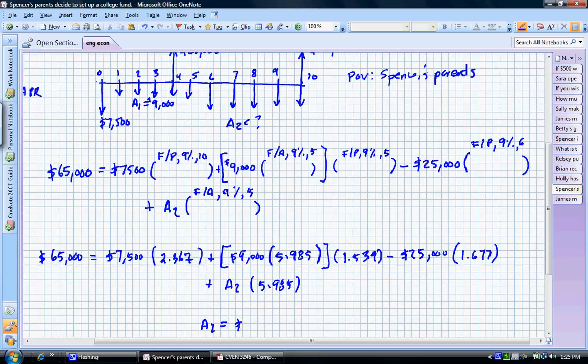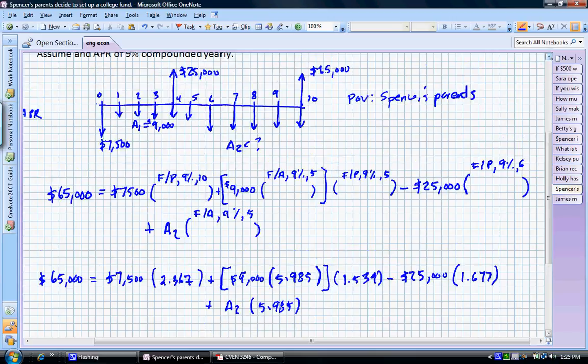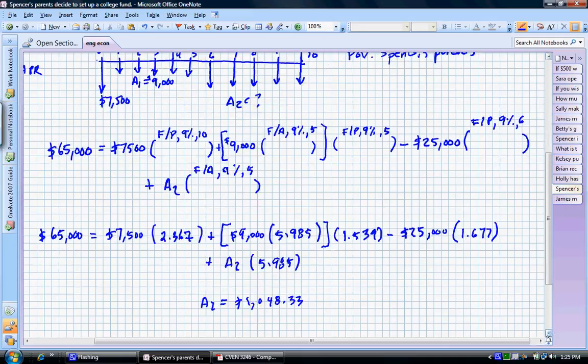That means we tell Spencer's parents that if this situation occurs where they have this cash flow diagram here, where they have the withdrawal and they're depositing and opening an account with a certain amount, that in year 6, 7, 8, 9, and 10, they need to make an investment of $1,048.33 to have the exact value of $65,000 for Spencer's education.